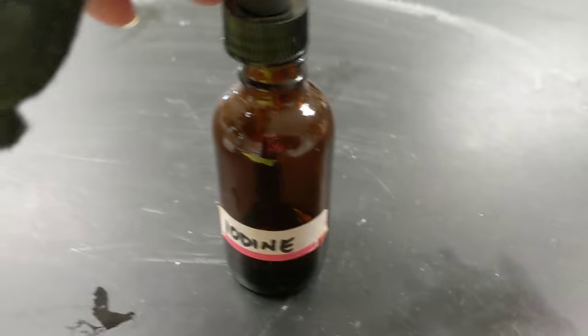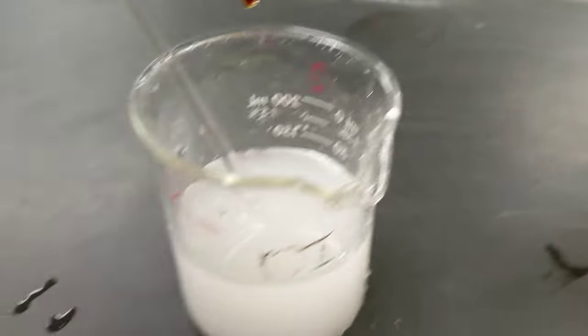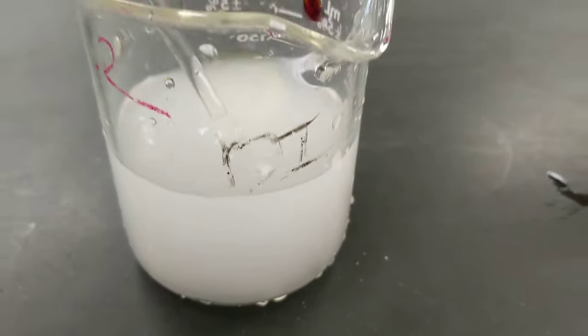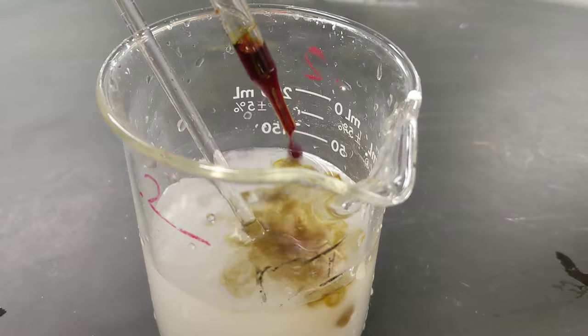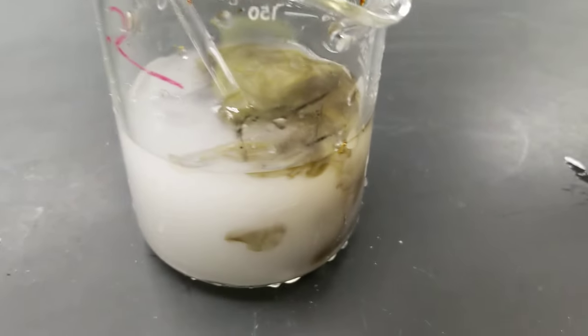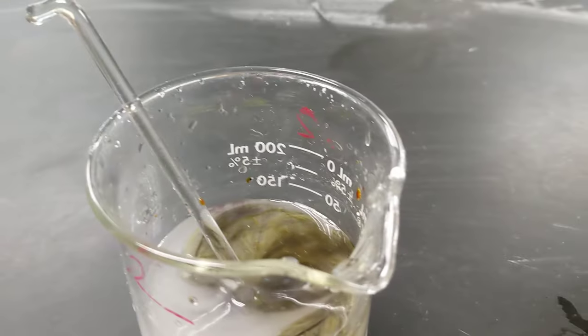So I have some iodine here, and we're going to put it in the starch, and you can see what happens. It starts off orange, and then when it comes into contact with starch, it turns purple or black.